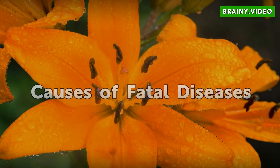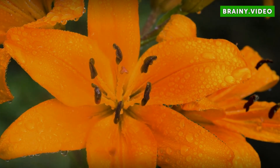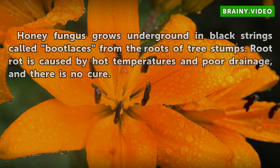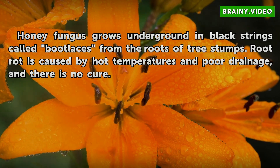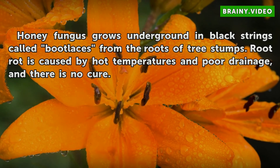Causes of fatal diseases. Honey fungus grows underground in black strands called bootlaces from the roots of tree stumps. Root rot is caused by hot temperatures and poor drainage, and there is no cure.